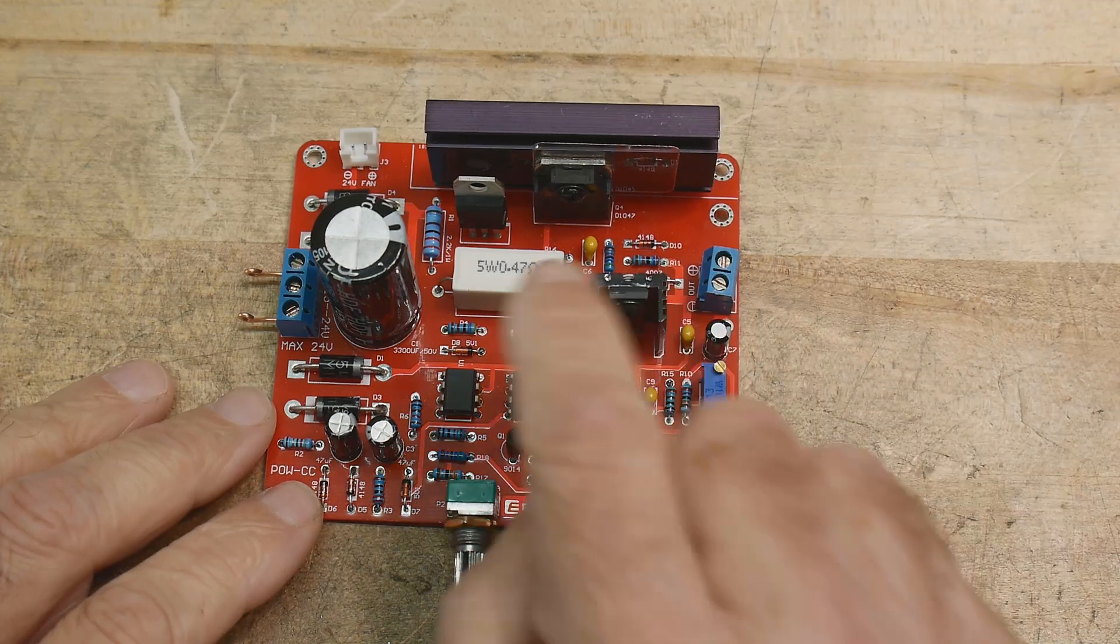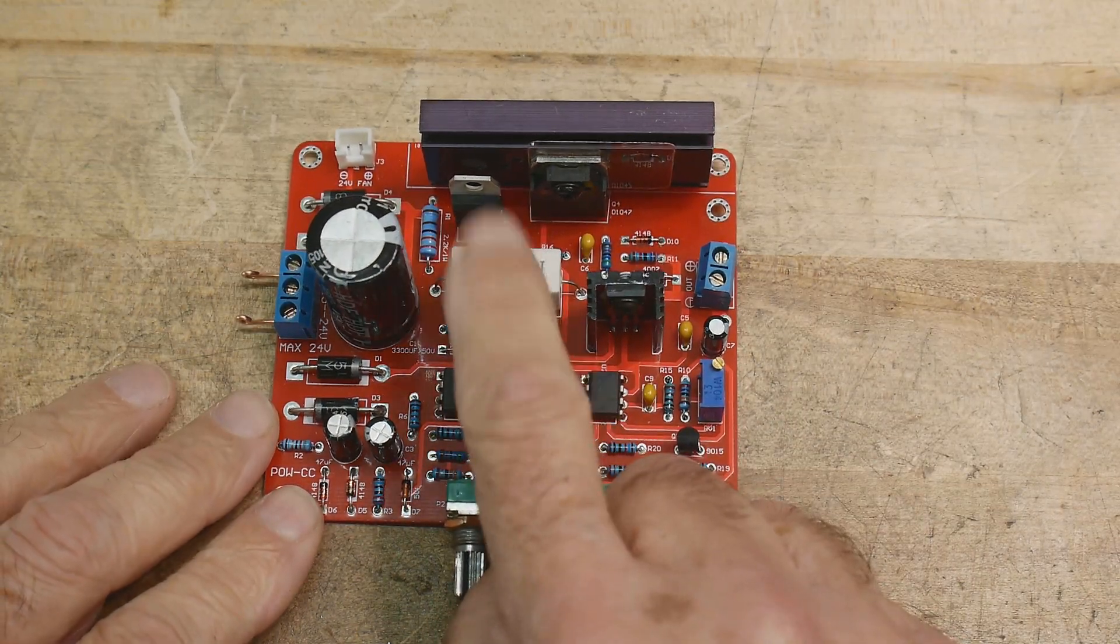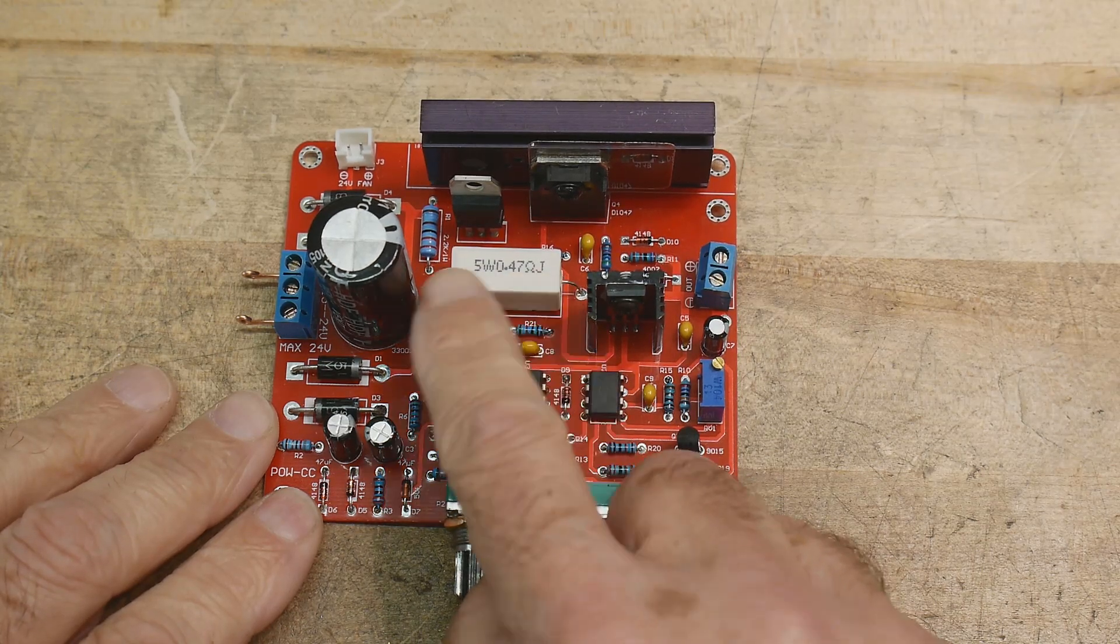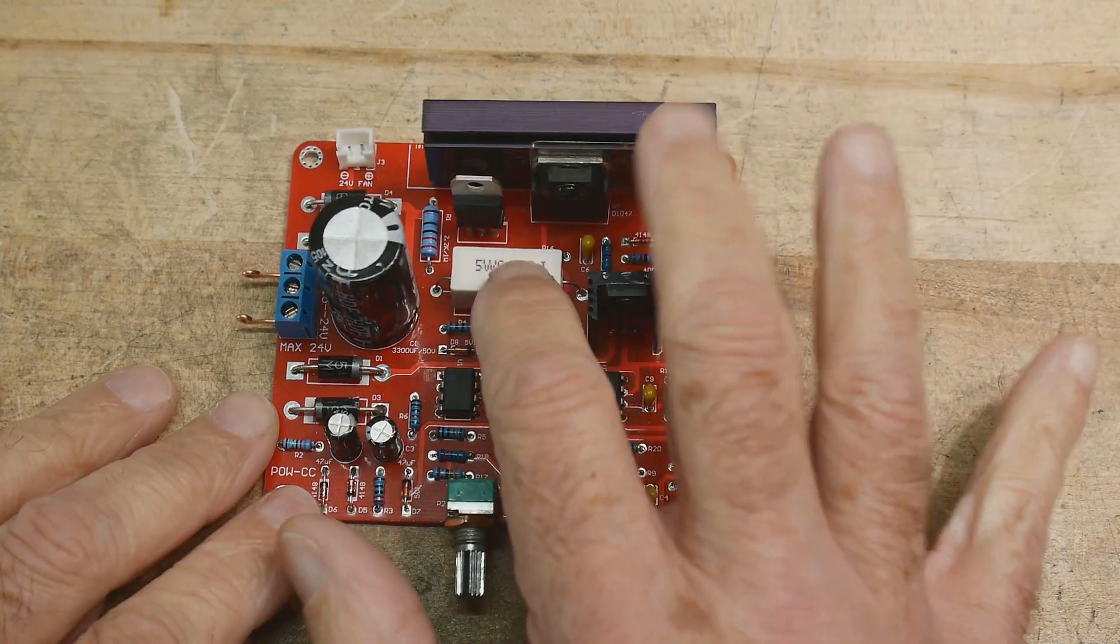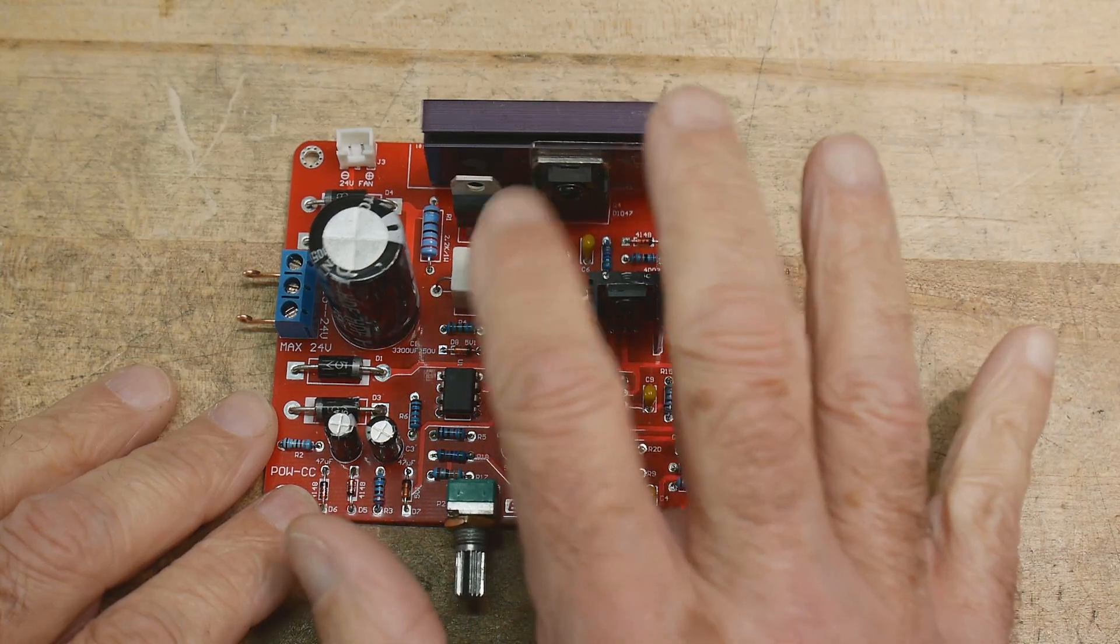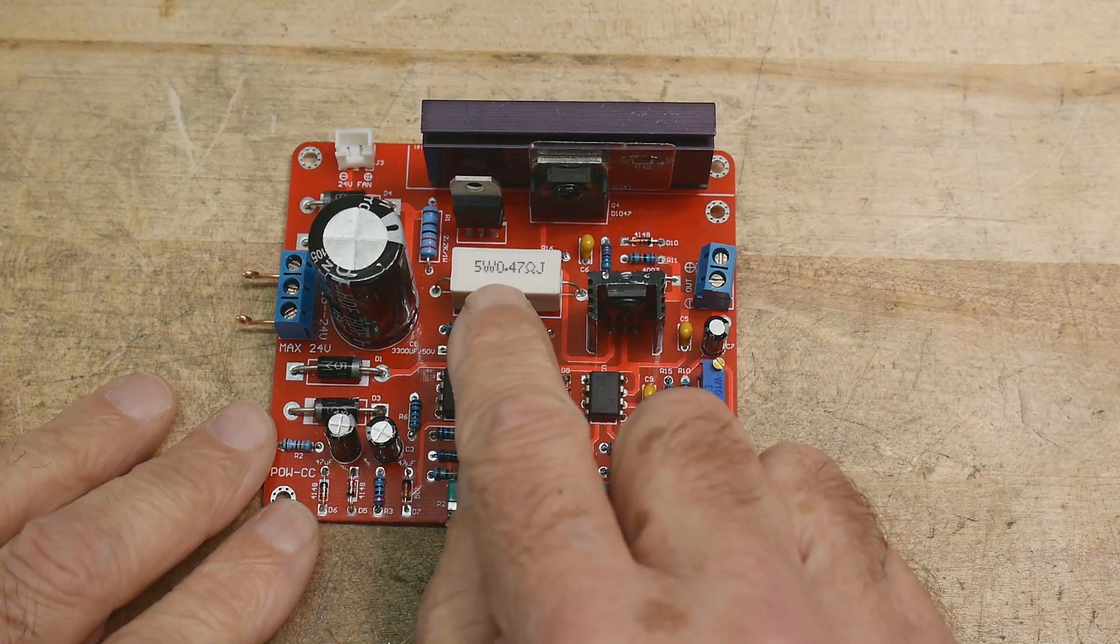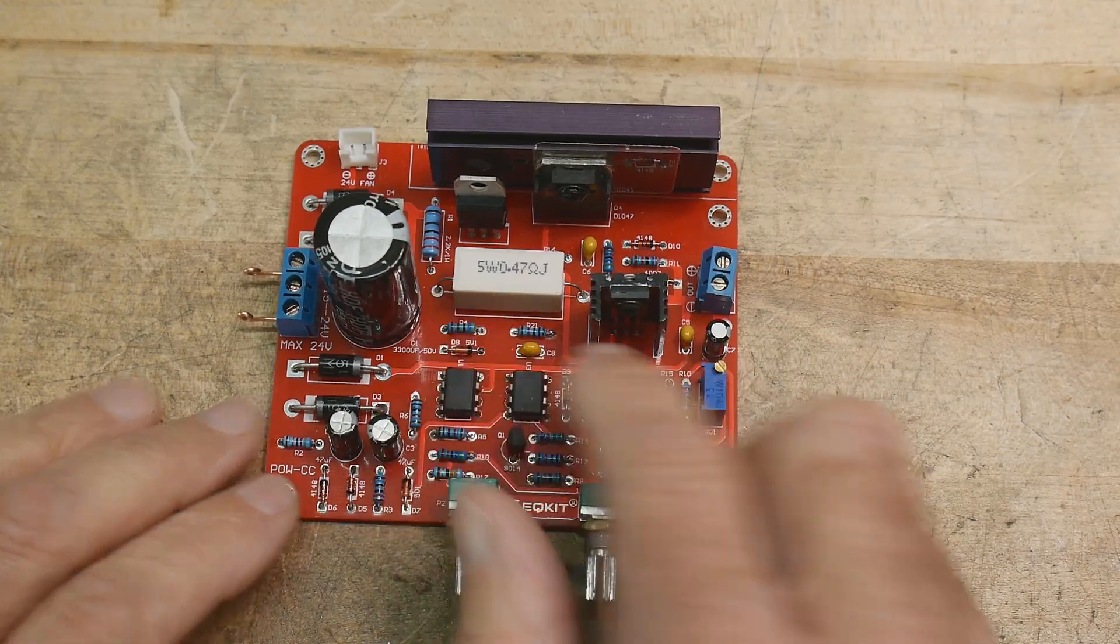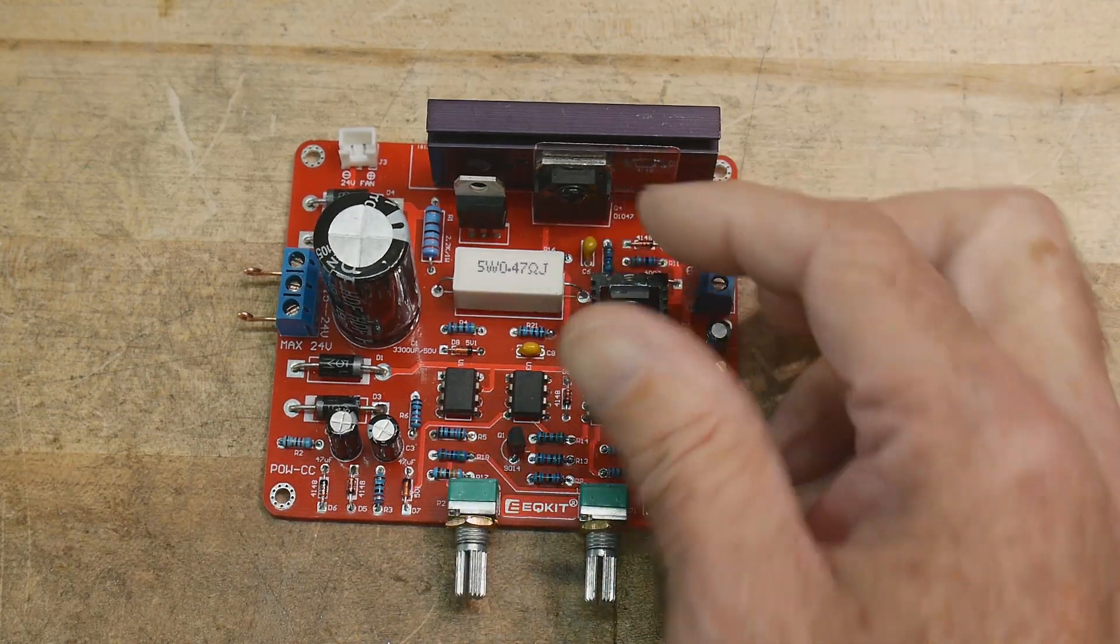So the current is going to be measured by this resistor here. The voltage across the resistor is the amount of current that goes through it. So it all comes down to this one resistor here. It's a 0.47 ohm, so very low ohm, so we'll have a very low voltage across it, but let's see how that can work.